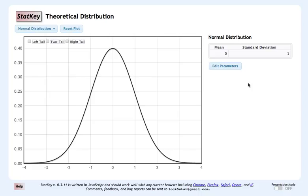So what we're going to want to do is click on this Two Tail tab in StatKey and then adjust the central area here that's, by default, 0.95.